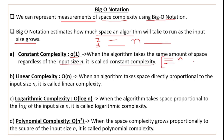Next we have linear complexity, written as O(n) — order n or big O of n. When an algorithm takes space directly proportional to the input size, it is called linear complexity. The space occupied grows as much as the input you provide, so this is called linear complexity.